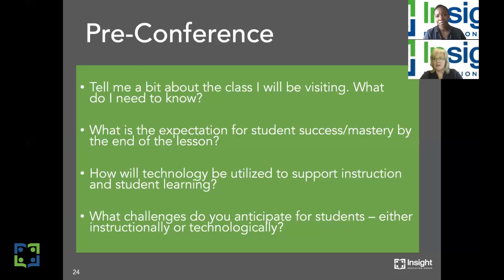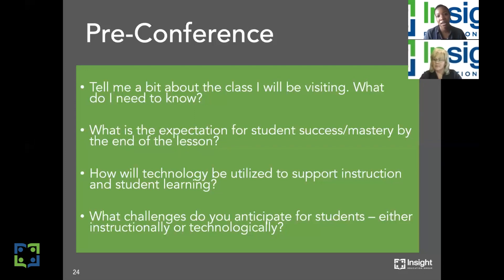Do you anticipate any challenges for the students, either in terms of instruction or technology? Attendance has been a little spotty, and in the same vein, it's been challenging to ensure students remain on task and fully engaged. In the classroom I know who tends to get off task and I can use proximity to evaluate their work quality. But that's much harder in this setting. If you could look for that when you're observing, I would really appreciate it — I'm trying to figure out more ways to ensure students are actively engaged from start to finish, especially since we have less time together now. I absolutely will pay attention to that specifically.